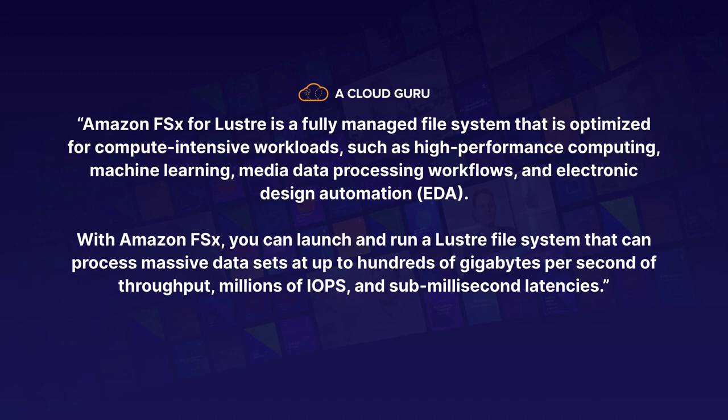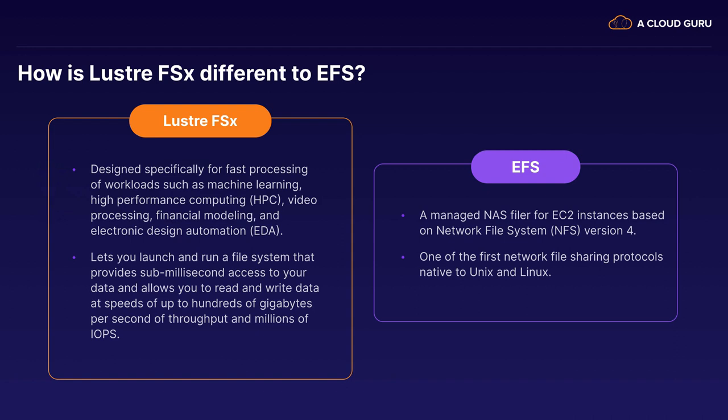You'd use Amazon FSx for Windows when you're using Windows applications, and if you just need shared storage for Linux, you would use EFS. So how is Lustre FSx different to EFS? It's specifically designed for processing workloads such as machine learning, high-performance compute, video processing, financial monitoring, and electronic design automation. It lets you launch and run a file system that provides sub-millisecond access to your data and allows you to read and write data at speeds of up to hundreds of gigabits per second of throughput and millions of IOPS. Whereas EFS is a managed NAS filer running the network file system version 4 protocol, one of the first network file sharing protocols native to Unix and Linux.